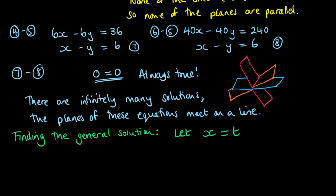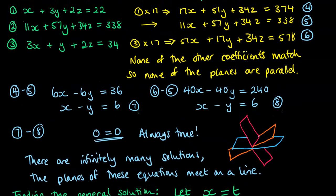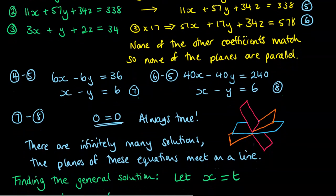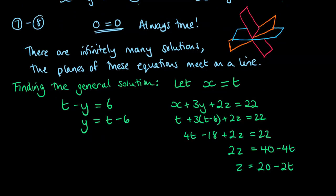If x was equal to t, and we take a look back at either equation 7 or equation 8, then we get that t minus y is equal to 6. So y would be equal to t minus 6 when x is equal to t. Then we go back and look at the other equations to figure out what z would be. I'll go with equation 1, so x plus 3y plus 2z. If x was t, 3 times (t minus 6) for 3y plus 2z equals 22, and we get down to z equals 20 minus 2t.